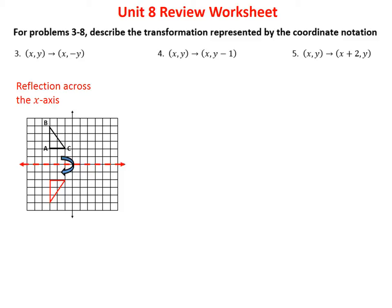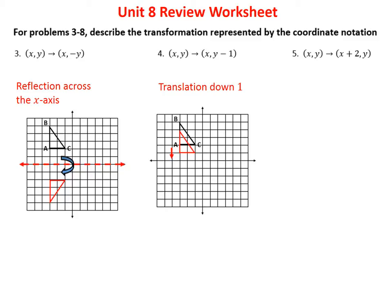So that is a reflection across the x-axis. A reflection across the y-axis works differently: the y stays the same, but the x changes. In number four, x stays the same but y moves down one — y minus one means go down one. So what we have is a translation down one; the triangle just shifts down one while the x's stay the same.